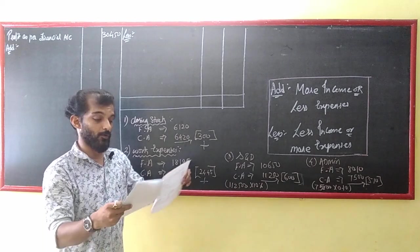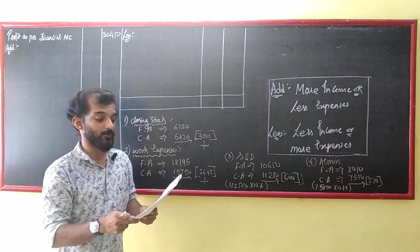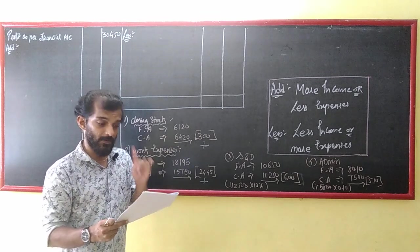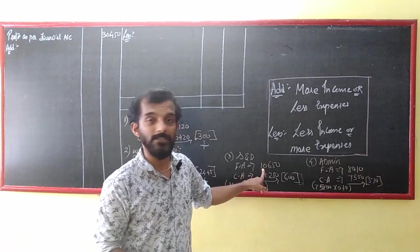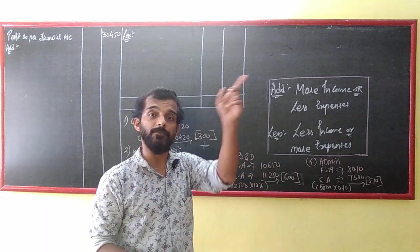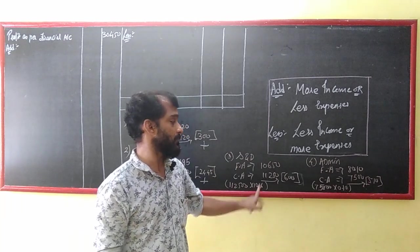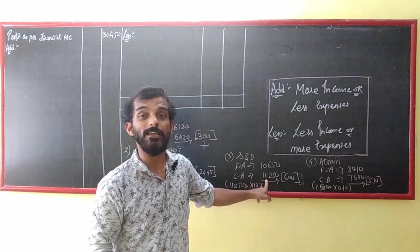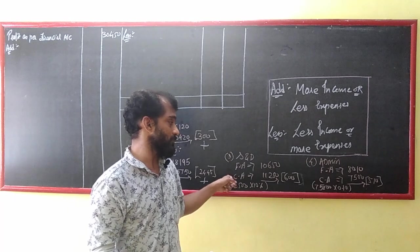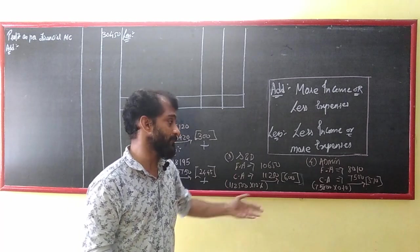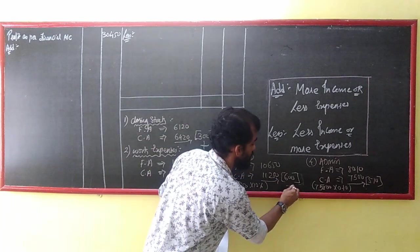Selling expenses: in FA they are 10,650. In cost accounts they are taken at 10% of sales. Sales are 1,12,500, so 10% is 11,250. Cost has more expense — a difference of 600 — so we deduct 600. Administrative expenses are taken at 0.10 rupees per unit sold. Units sold are 75,000, so cost charges 7,500 — FA has 8,010, so cost has less expense. Less expense means we add.